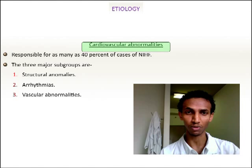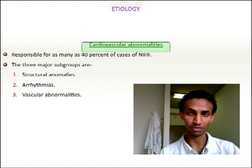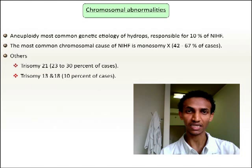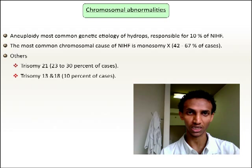Other cardiovascular anomalies that can cause non-immune hydrops fetalis include arrhythmias — bradyarrhythmias or tachycardia — which can lead to high output cardiac failure and result in hydrops fetalis. Vascular anomalies, including sacrococcygeal teratomas, can also lead to hydrops fetalis.